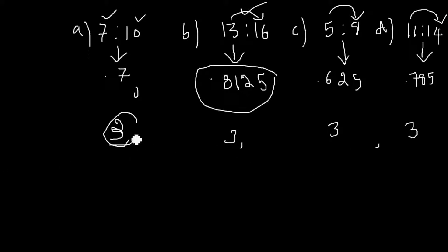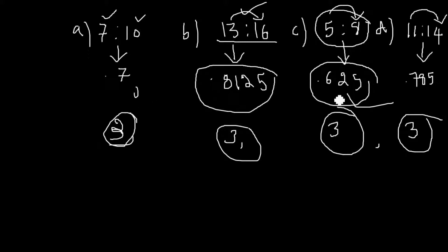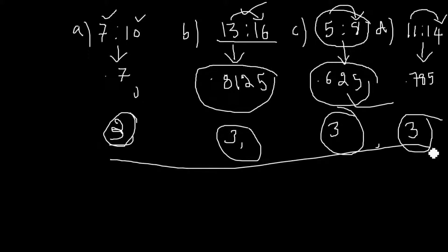Take the positive difference. The difference between all the options is the same — it is 3 for each ratio. When all differences are equal, the greatest numerator gives the greatest ratio, so 13 to 16 is the greatest, and 5 to 8 is the lowest. Without any calculation, we can find the answer if the differences are the same.